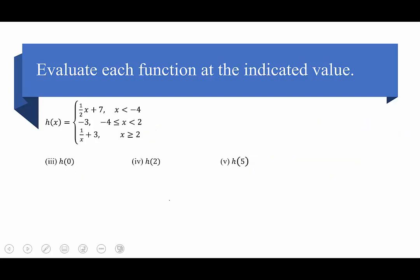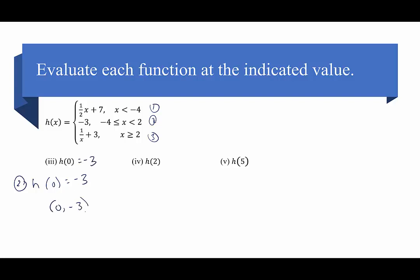For h of 0: does 0 fall into piece 1, piece 2, or piece 3? Zero fits nicely between negative 4 and 2, so it goes into the second piece. h of 0 equals negative 3 as well, because anything in that middle piece equals negative 3. We can write the ordered pair 0 comma negative 3.